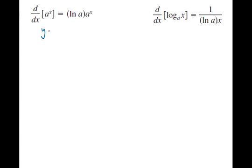So let's start with the equation y equals a to the x, and we're looking for dy/dx, which will be the derivative of a to the x. With logarithmic differentiation, we start by taking the natural log of both sides. So the natural log of y equals the natural log of a to the x. Using the property of logarithms, we bring the x out front as a constant multiple, giving us ln(y) equals x times ln(a).